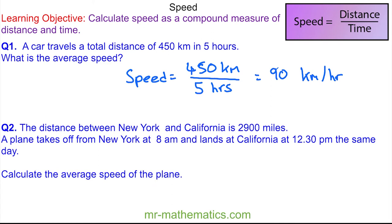So we're going to begin by working out the time, and the time is the difference between 8 am and 12:30 pm, which is four and a half hours, which we'll write as 4.5. So this is four hours and 30 minutes, which is half an hour. And the distance we are told is 2900 miles.